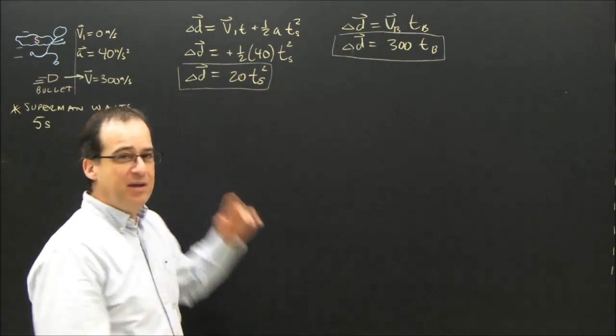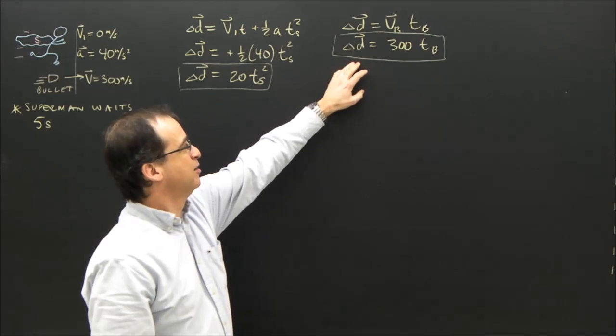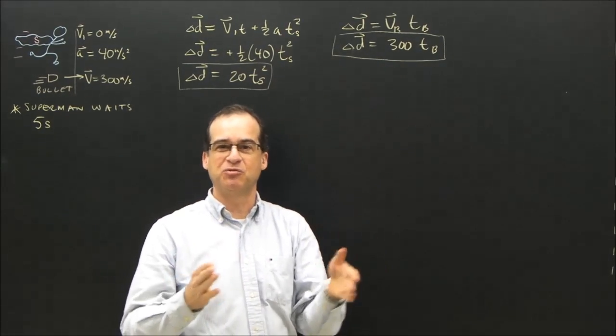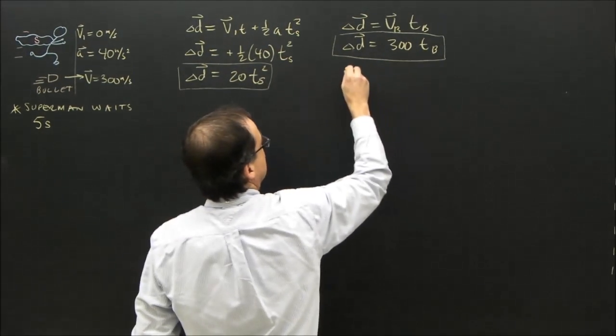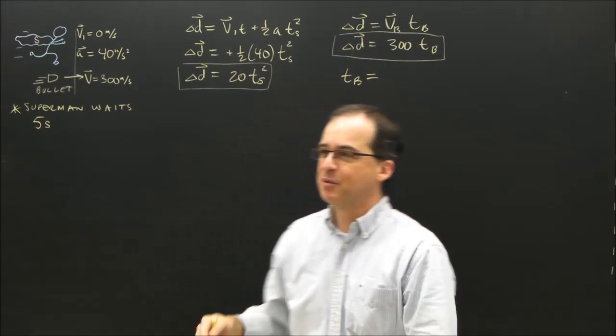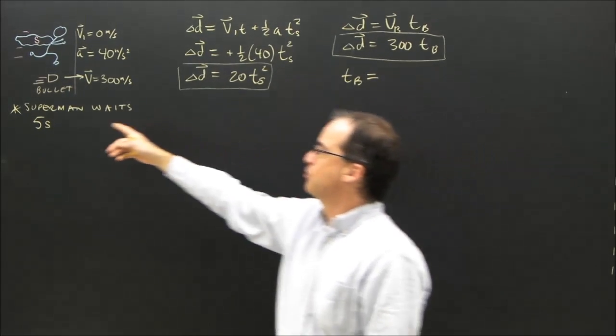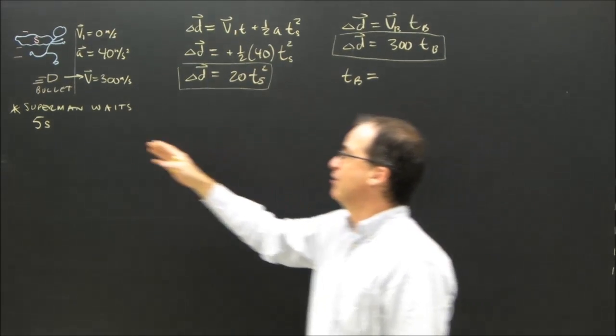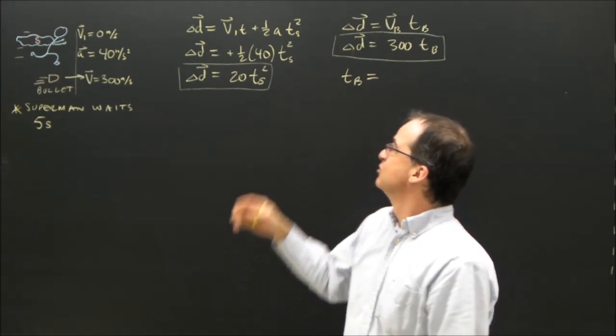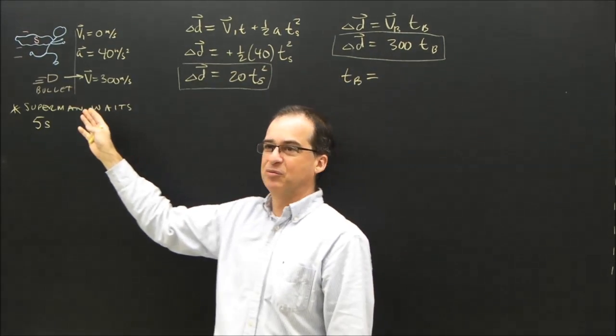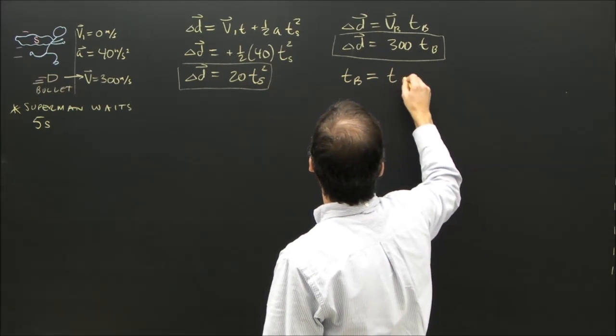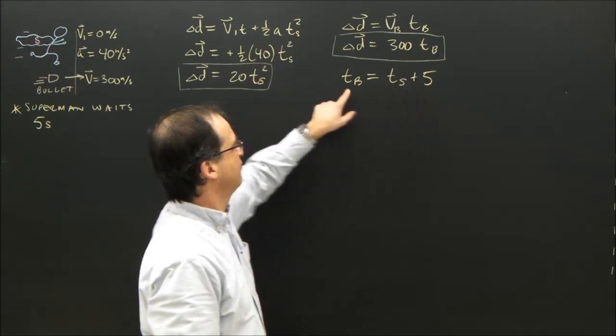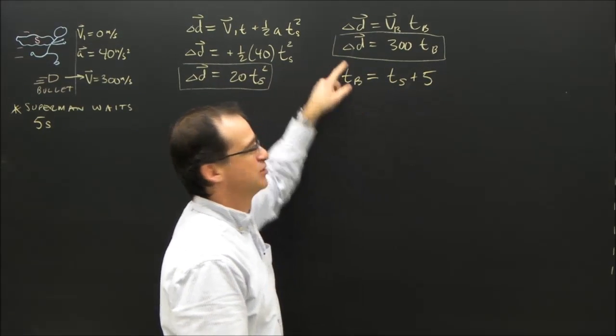So these two are equal. When they meet, they're in the same position. So I can set this equal to that. But the problem is I still have these two unknowns. So what I need to do is find the time or relationship between the two times. And what I'm going to say is the time for the bullet, well, the time the bullet takes to get there is related to Superman's time. If it takes the bullet 8 seconds to get there, then that leaves Superman only 3 seconds because he waits 5 seconds. So it's going to be the time of Superman plus 5 seconds. This is the part that's difficult.